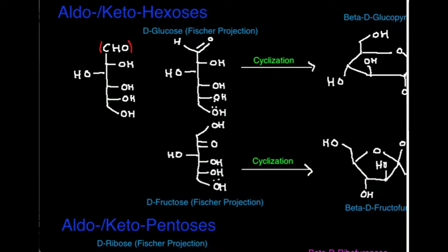We're ultimately going to discuss how cyclization occurs. Cyclization is when you have some molecule that's in a linear form and it undergoes an internal reaction to become cyclic.